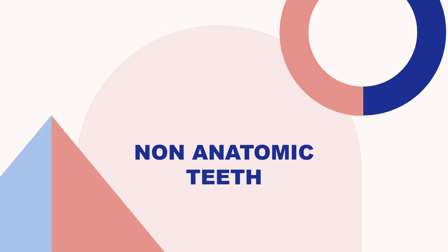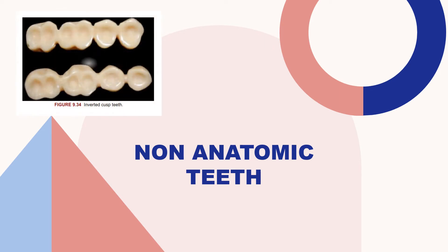Coming to the non-anatomic teeth. These are the inverted cusp teeth, one of the first non-anatomic designs. The occlusive surface of the teeth was flat with sharp concentric ridges around cup-like depressions, known as inverted cusps. Efficient mastication was claimed with this type, but the depressions became clogged with food and lost their efficiency.